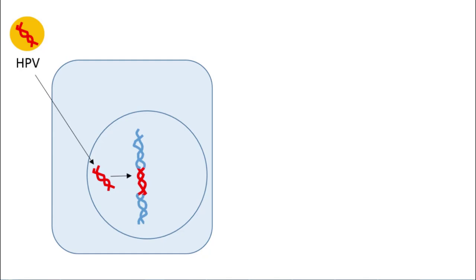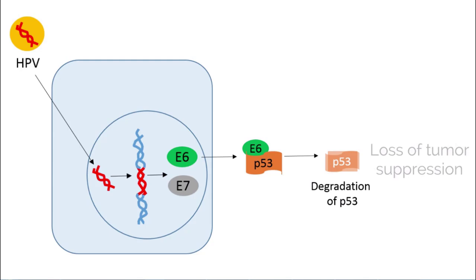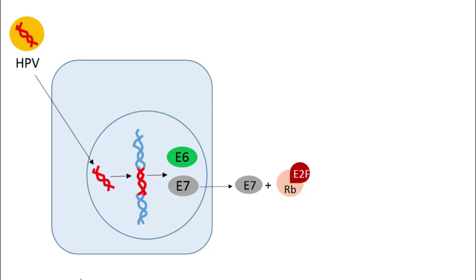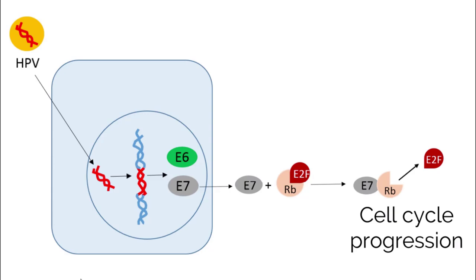E6 binds P53 protein, which is a regulator of cell growth and tumor suppressor gene. The binding of E6 to P53 causes degradation of P53, which causes unchecked cellular cycling and accumulation of mutations without repair. E7 binds retinoblastoma or RB protein. RB protein halts cell growth, induces cell apoptosis, and binds E2F transcription factor to make it inactive. The binding of E7 to RB causes release of transcription factor E2F, which promotes cell cycle progression. This combination of E6 and E7 causes immortalization of infected cell lines.